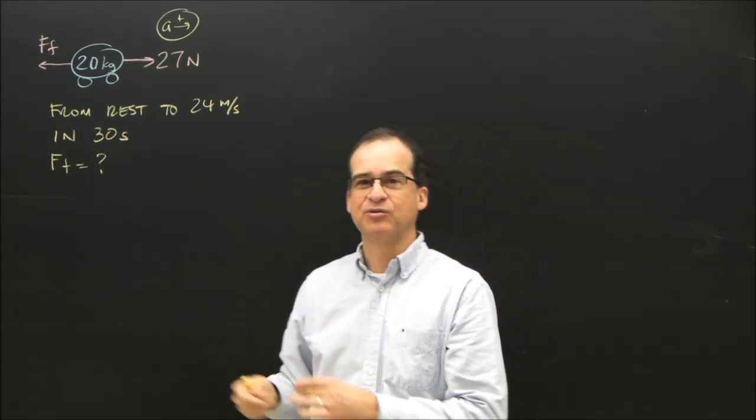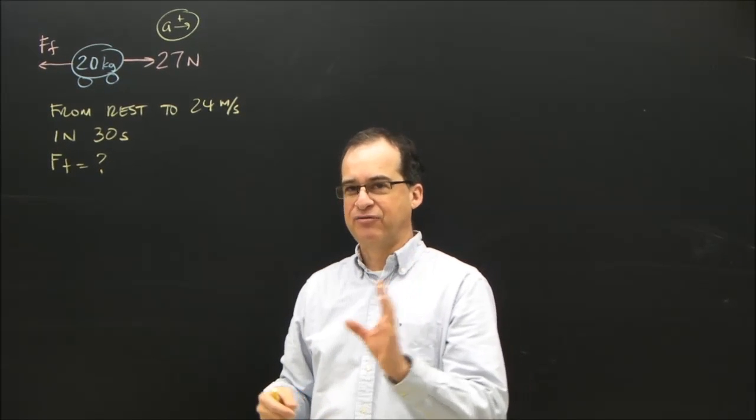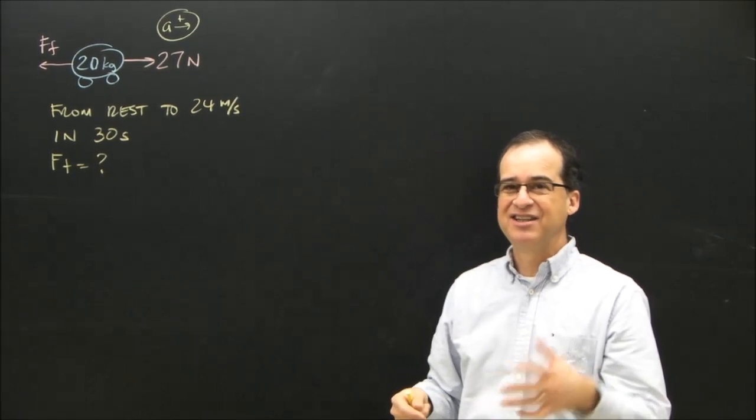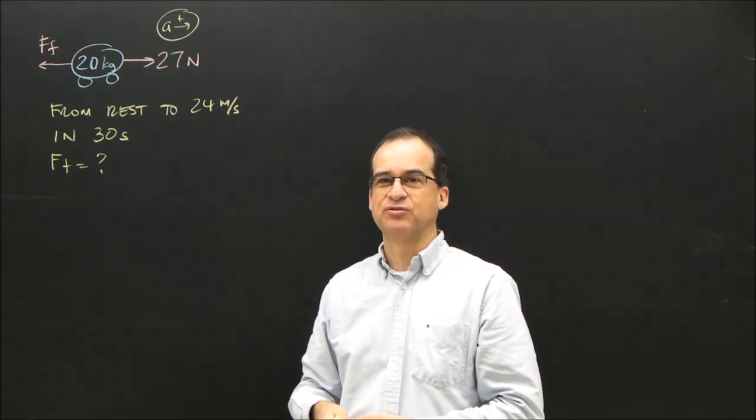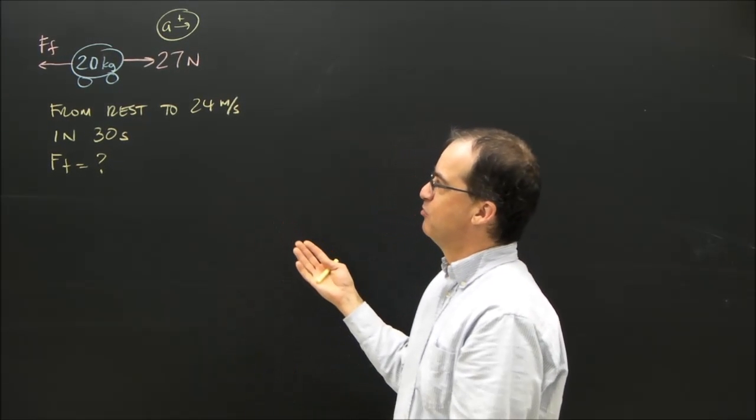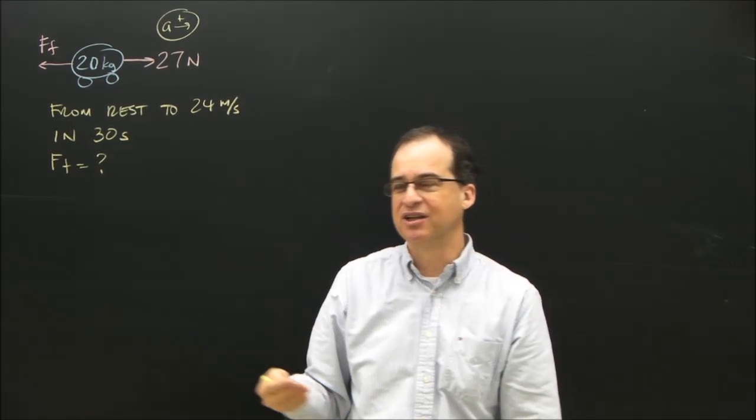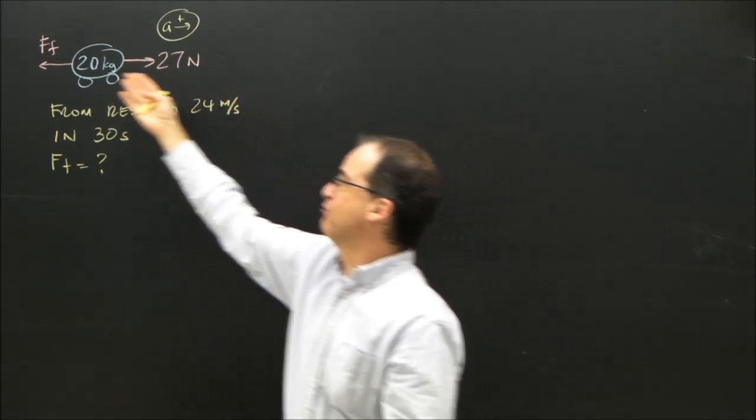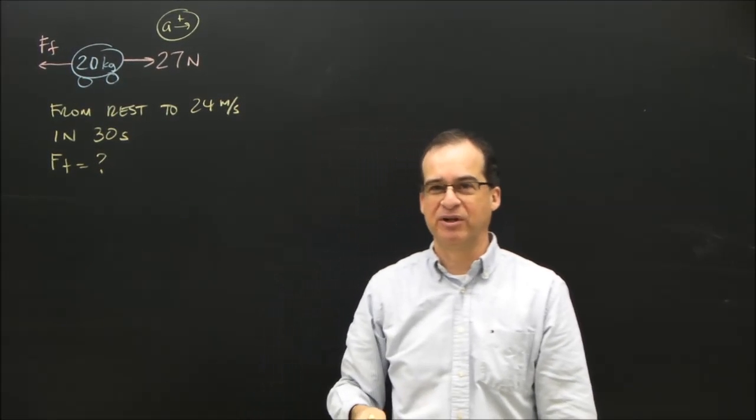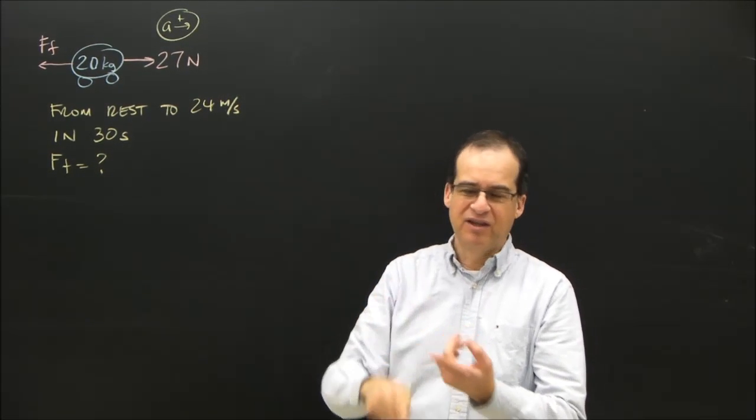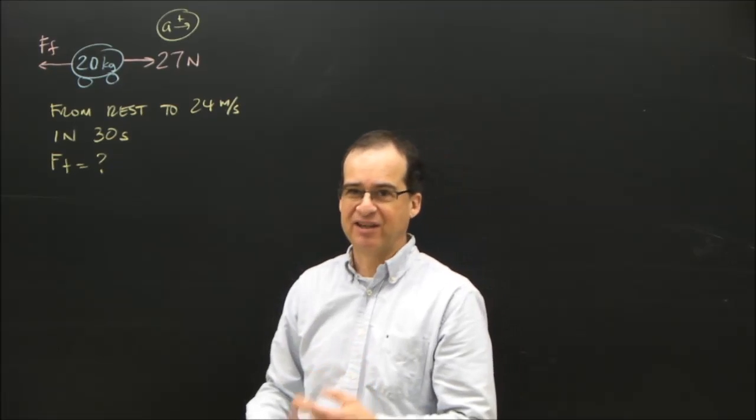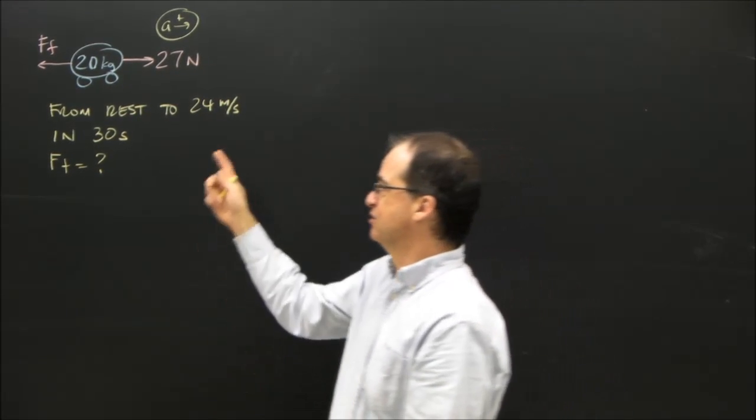This is really important to know, that with the F net equals MA formula, the variable, the acceleration, is in your big five, all the five formulas for acceleration. So frequently what we do is say, well, instead of just giving them the acceleration and making it too easy, I want to know something about the forces, but I'm not going to tell you the acceleration. But I'm going to tell you the initial velocity or the distance or something like that, and then you have to solve for the acceleration.